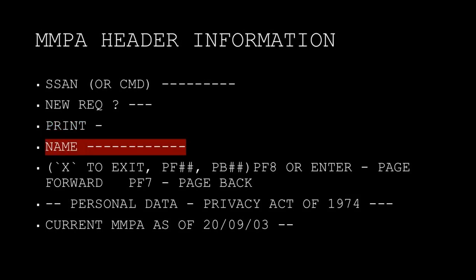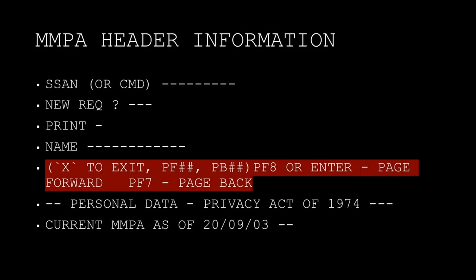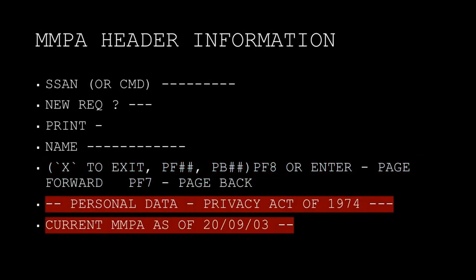The next block is the name — I've never been able to put someone's name and have it populate their information. The next block explains how to navigate: X to exit, PF8 or Enter to move forward, PF7 to go backwards. The next block is the Privacy Act Statement — information in MMPA is covered by the Privacy Act and can only be used for official purposes, so don't look up people's information you have no business looking up. The date block indicates when the MMPA was last printed, so you'll know if your printout may be outdated.